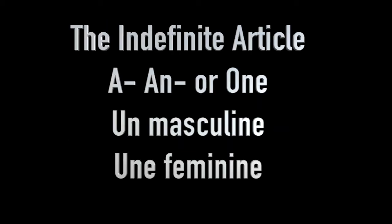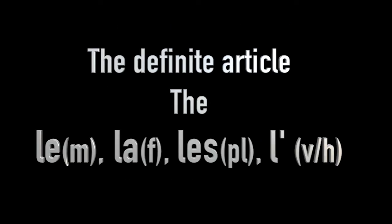indefinite article—a, an, or one, which is un masculine, une feminine—the right indefinite article or the right definite articles, that's the word for the, of which there are four in French: le for masculine, la for feminine, les for a plural noun, and l'apostrophe for nouns that begin with a vowel or H, for example